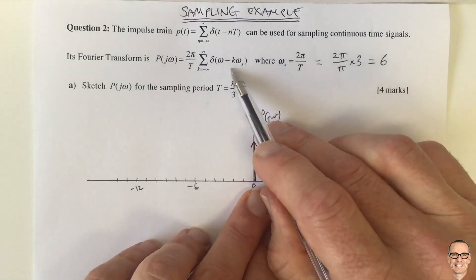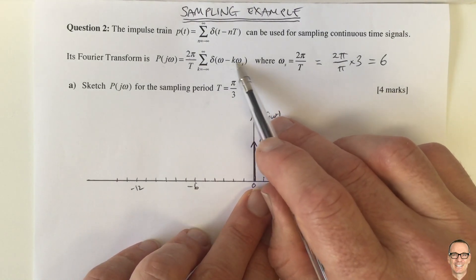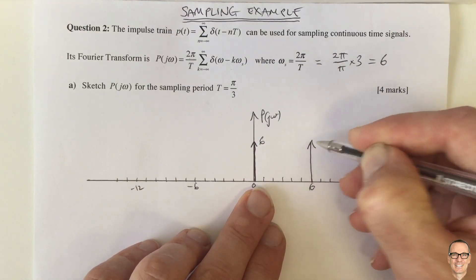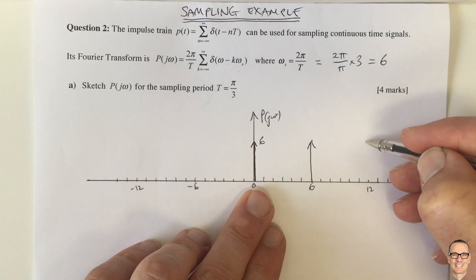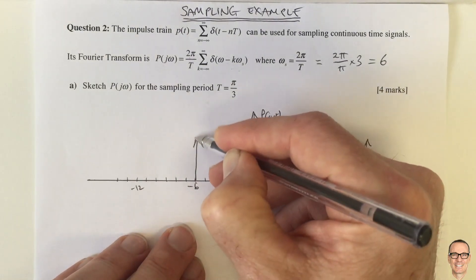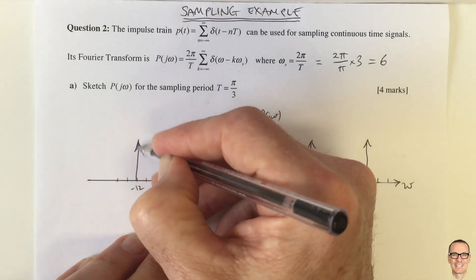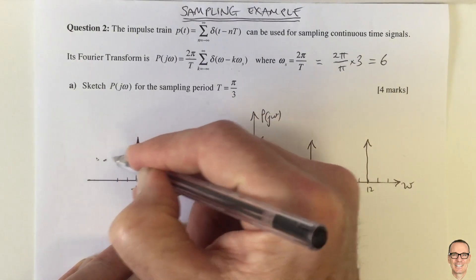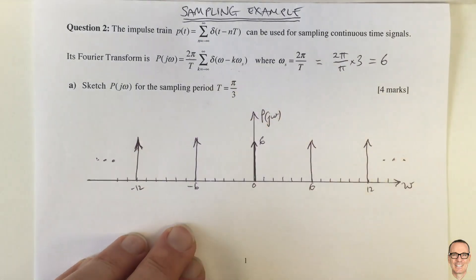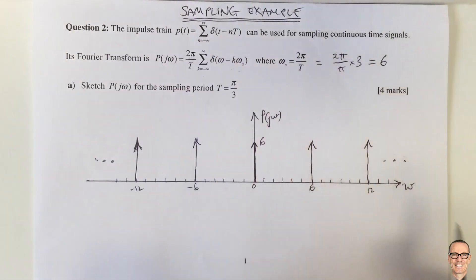When k=1, we have a delta function at omega equals omega_s, which equals 6. When k=2, there's a delta function at 12. The same applies for the negative values: minus 6 and minus 12. These repeat forever because it is an infinite summation. This completes the sketch of the Fourier transform of our sampling waveform.